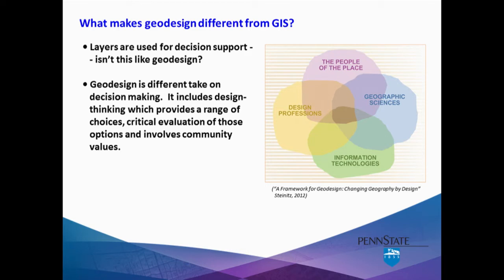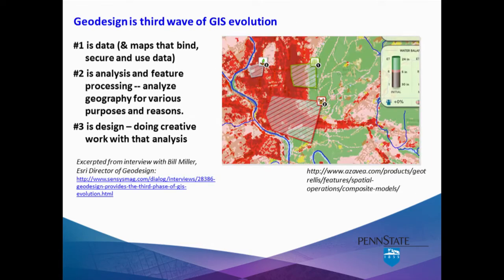It adds the uniqueness and complexity of design to GIS, which results in a range of choices and involves community values. And Bill Miller, who's trained as a designer — he's an architect by training — states that geodesign is actually the third stage in the evolution of geographic information systems. Let me read a quote of his.